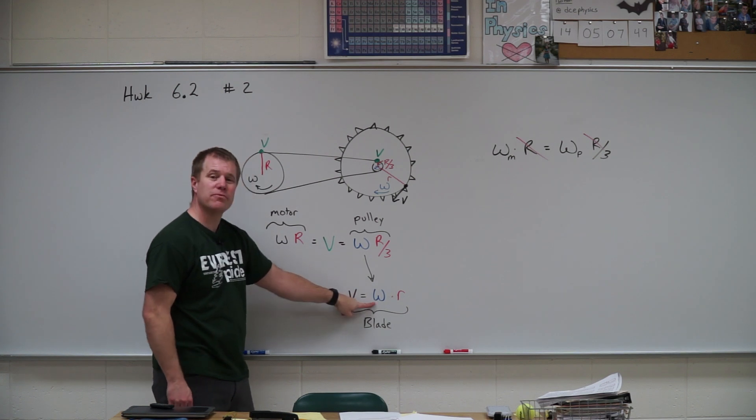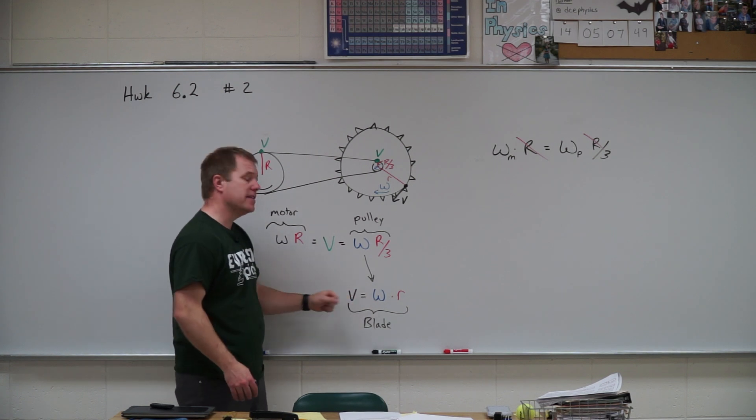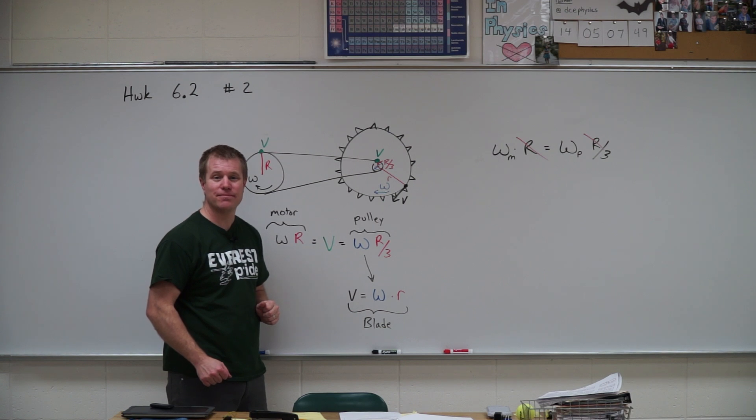You should then be able to find the omega for the pulley. Once you know the omega for the pulley, plug it in for the omega for the blade, and solve for the speed of those teeth on the edge of the blade. There's your hint.